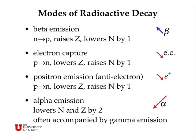Similarly, positron emission is where a proton would actually emit a positron, which is an antiparticle of an electron, or an antielectron. That turns the proton into a neutron, lowers the atomic number, and raises the number of neutrons.